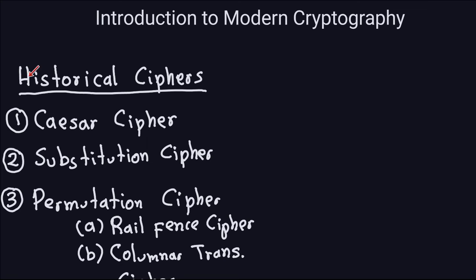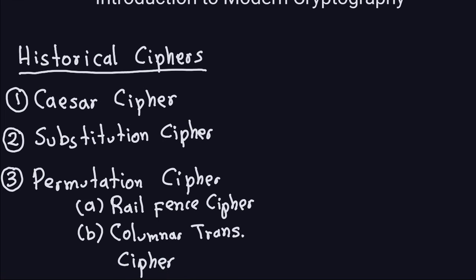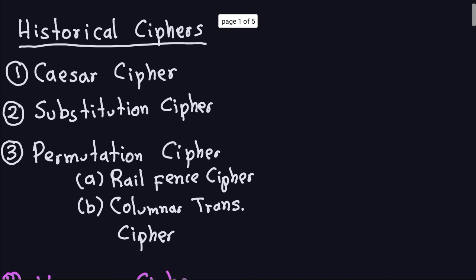Before we do that, I'm going to talk a little bit about historical ciphers — ciphers that probably nobody uses today for any serious encryption. We talked about the Caesar cipher or the shift cipher, the substitution cipher, and the permutation cipher, two cases of which were the rail fence cipher and the columnar transposition cipher. These are all the ciphers we covered so far.